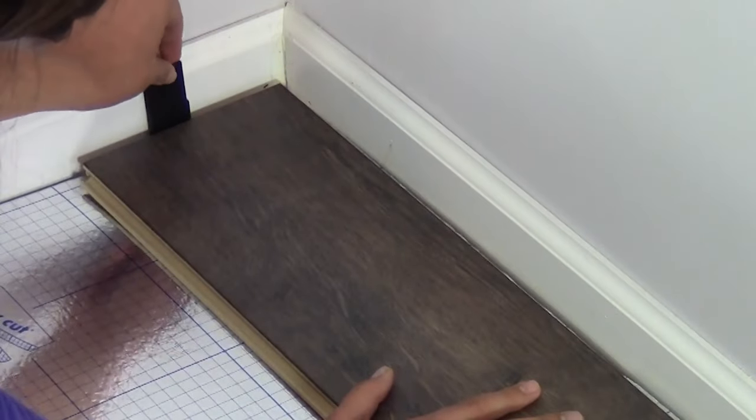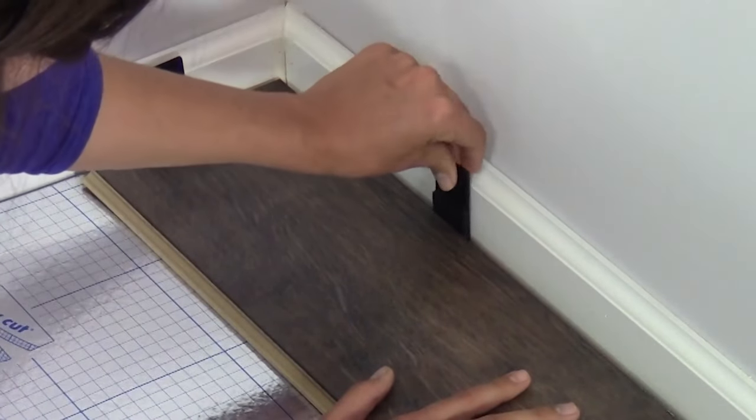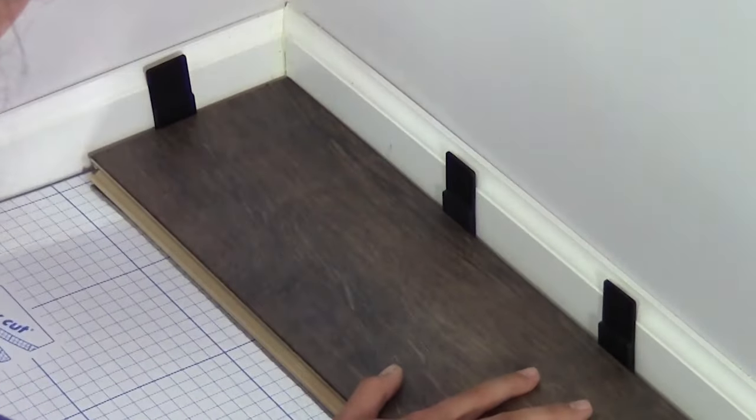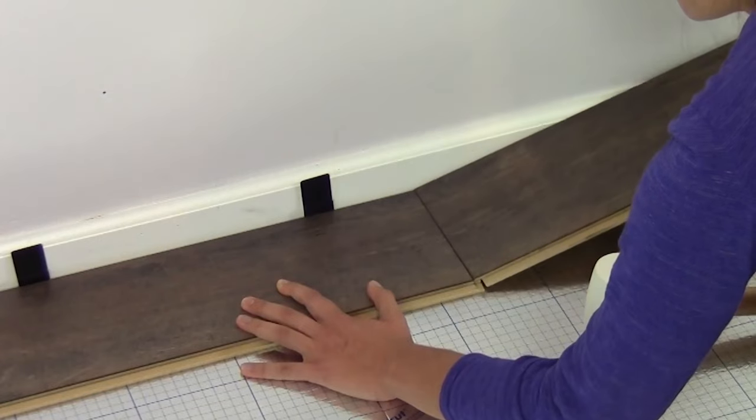Use spacers to leave a 5 sixteenths to 3 eighths inch expansion gap between the planks and the wall. Then click together the long side of the first row.